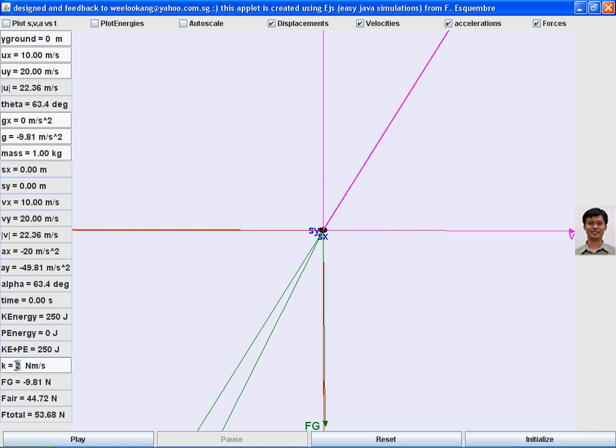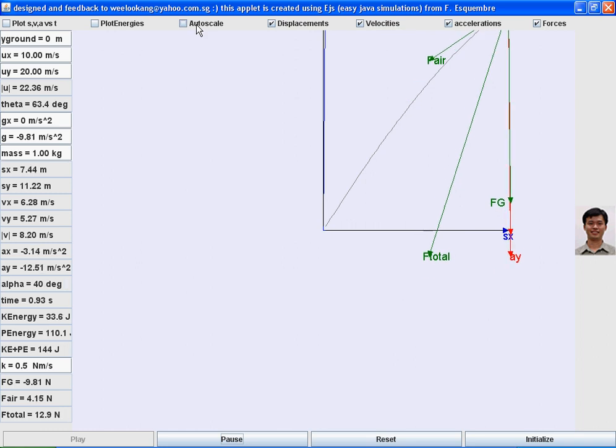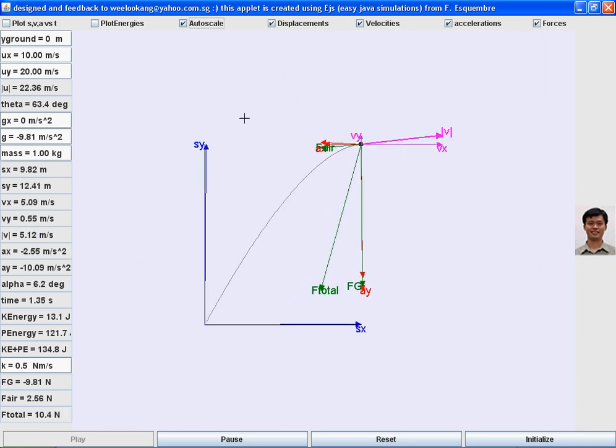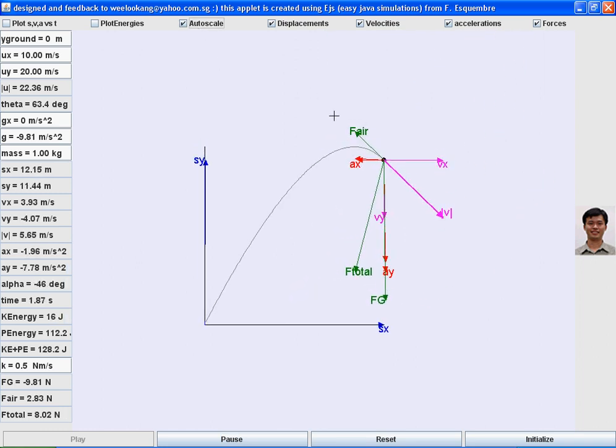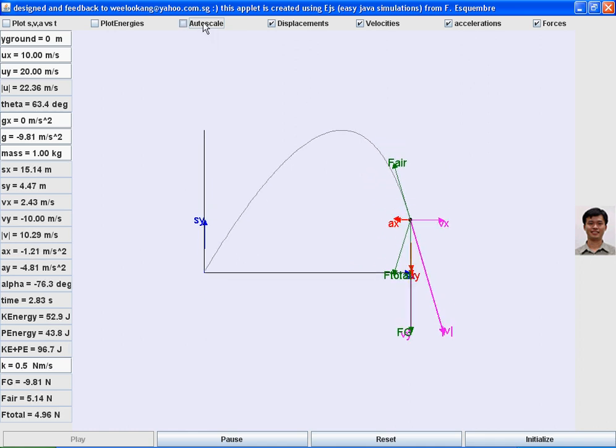Change the K to 0.5 for air resistant motion. Click on the play button, click on the autoscale. Then you can see that the simulation draws again in a very nice visually captivating manner.